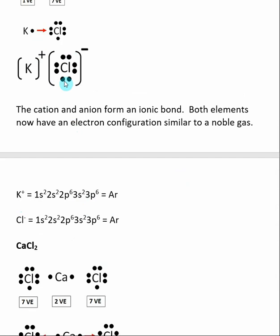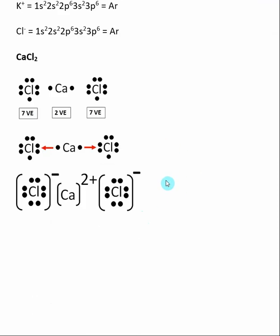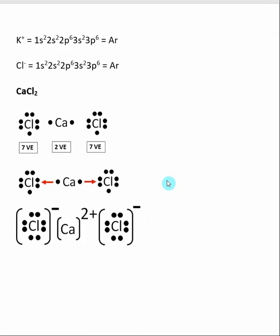And here, chlorine, you can see the eight electrons around it. Once it gains the one electron, it has an electron configuration similar to argon. So this goes back to the electron configurations of anions and cations that we have previously discussed. So it is possible to have more than one positive charge or negative charge inside of an ionic compound.